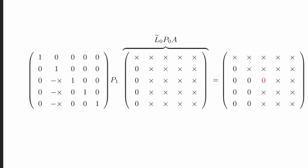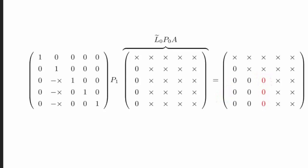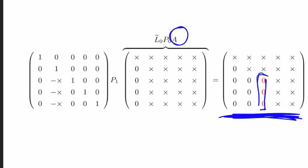LU factorization with partial pivoting can run into the situation where you have a zero on the diagonal. When that happens, you look at the elements below it and try to find one that is non-zero, then swap the appropriate rows. This breaks down if all of the elements below that zero are also zero — then you can't find a row with which to pivot. The question is: does this matrix not have an inverse? Because if so, we can reason that the original matrix did not have an inverse.